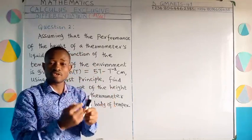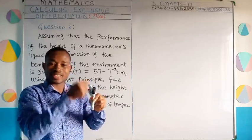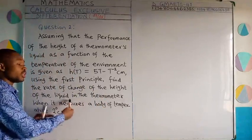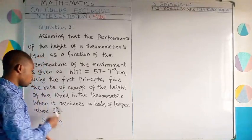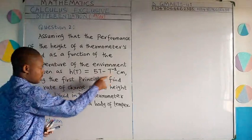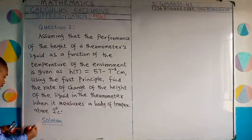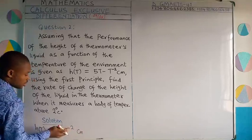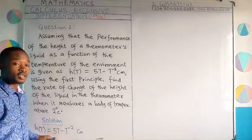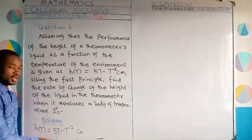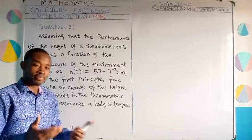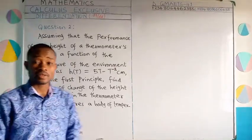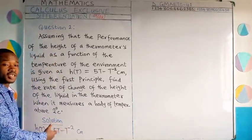Just think about when you go to hospital and a thermometer is used to take your temperature — the movement of the liquid results from the temperature of your body. The function given is h(t) equal to 5t minus t raised to the power minus 2 cm. Here h is the height and t is the temperature. To get the rate of change, we need to obtain dh/dt using the first principle.